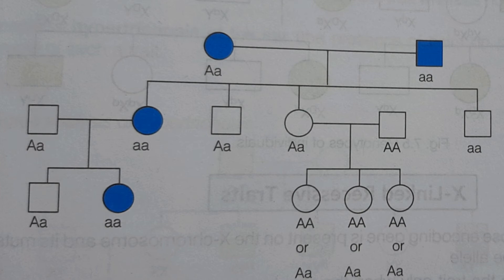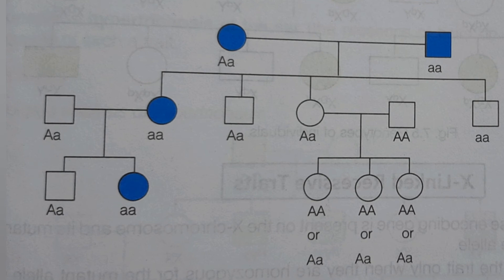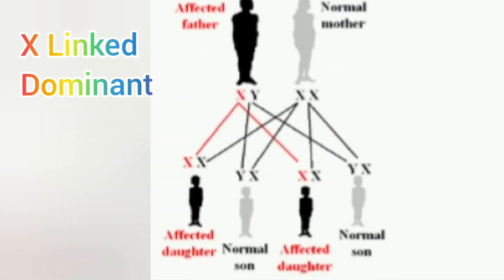This chart indicates that these females may either be homozygous dominant or heterozygous for the gene controlling the ability to roll the tongue. In both these cases, these three siblings would be able to roll their tongue.